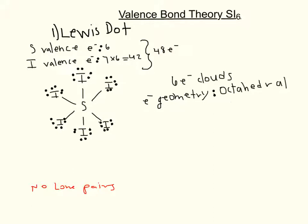Now that we have the Lewis dot structure drawn, we can determine the electron geometry, which will in turn help us determine the molecular geometry and also the VSEPR for this molecule. Looking at the structure, we see no lone pairs, but we do see the 6 iodides surrounding the sulfur. These 6 iodides represent the 6 electron clouds, and with those electron clouds we can determine the electron geometry, which would be octahedral. With octahedral, all angles are 90 degrees.